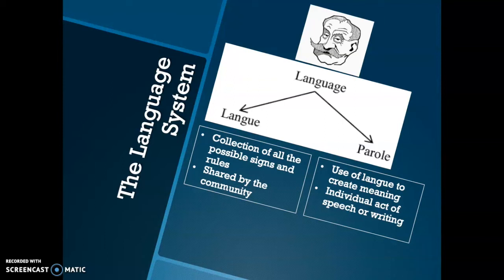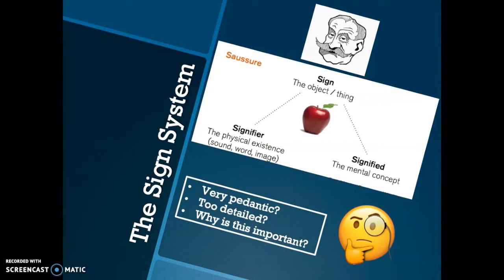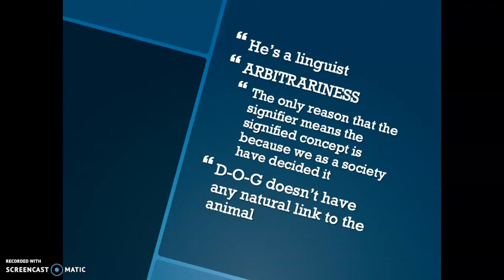Now how does he take this forward to talk about signs? He says that any sign has two components: the signifier and the signified. The signifier is the thing that does the standing in for something else, and the signified is the thing or the idea that the communicator is trying to evoke. So the word APPLE is the signifier and the actual apple or the concept of the apple is the signified. This might seem very pedantic or too detailed, but let's look at why this is important. He was concerned about the arbitrariness of this relationship — the only reason that the signifier means the signified concept is because we as a society have decided it.